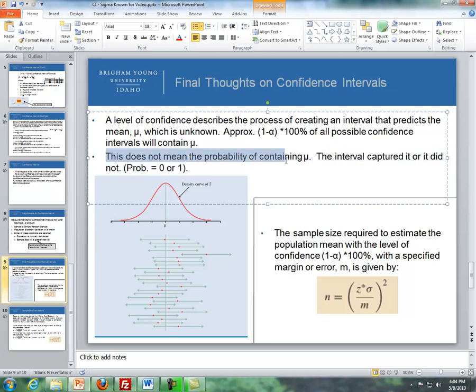This does not mean the probability of containing mu. The interval either captures it or does not. For instance, if we were to flip a coin...